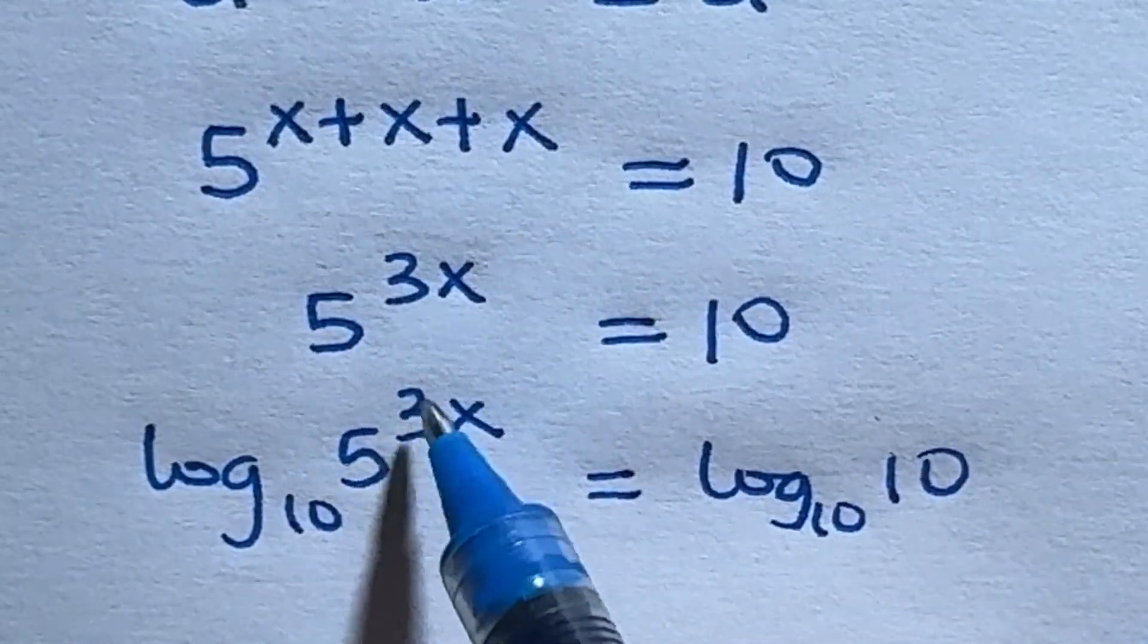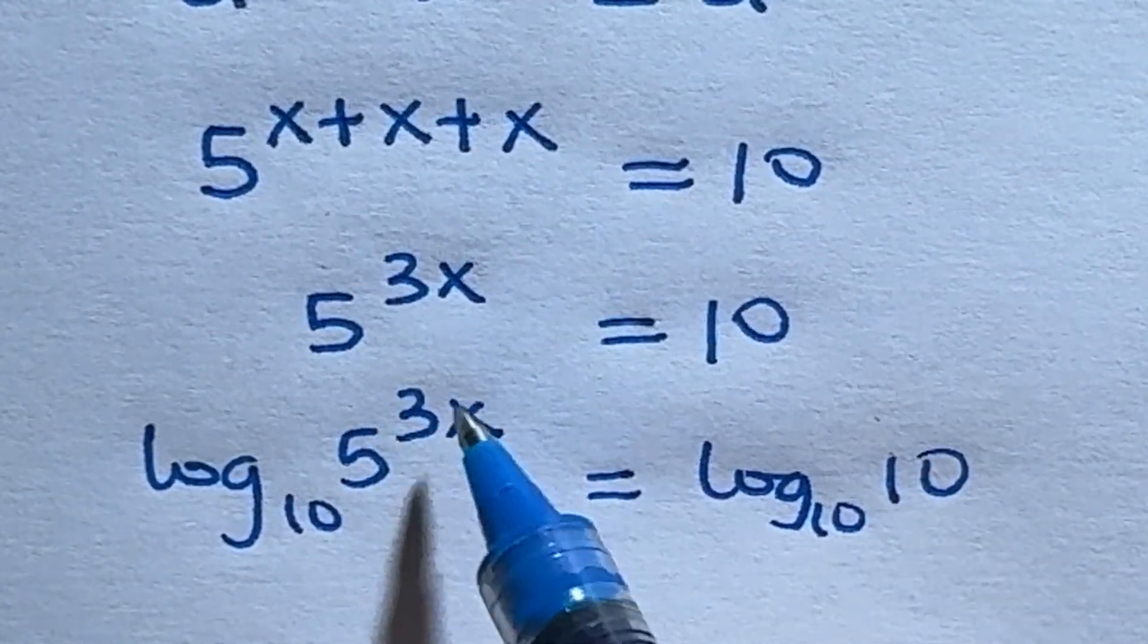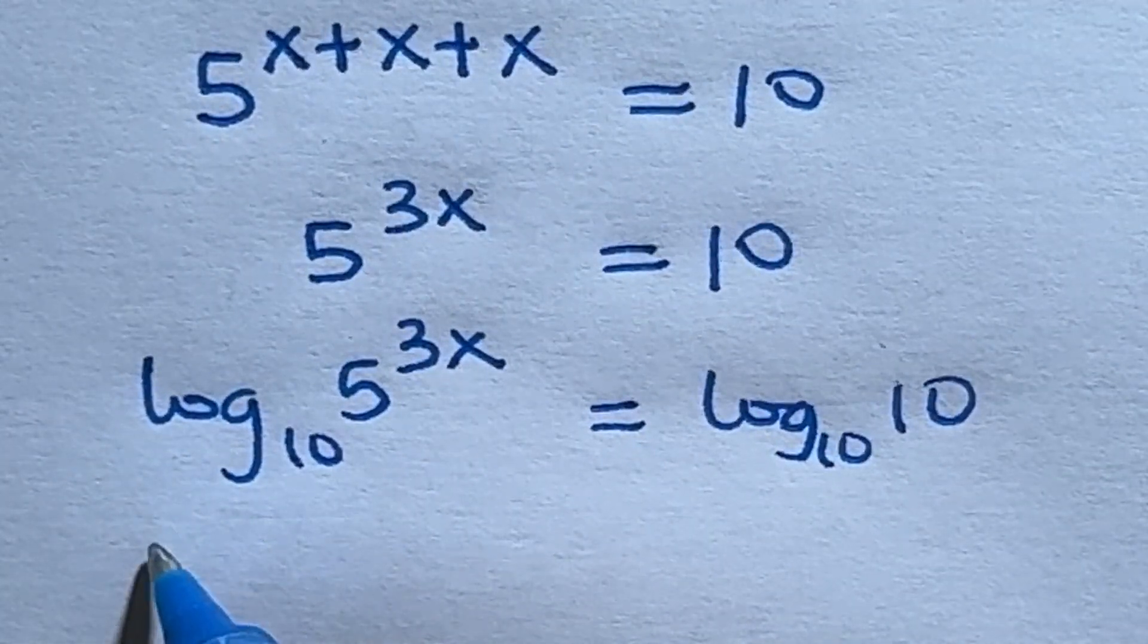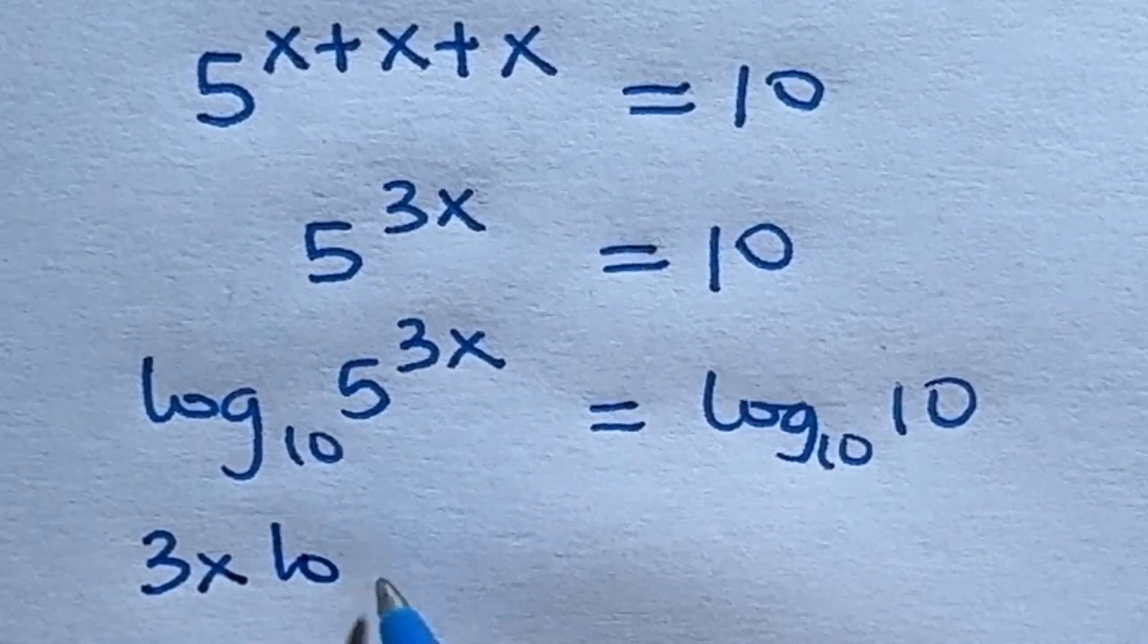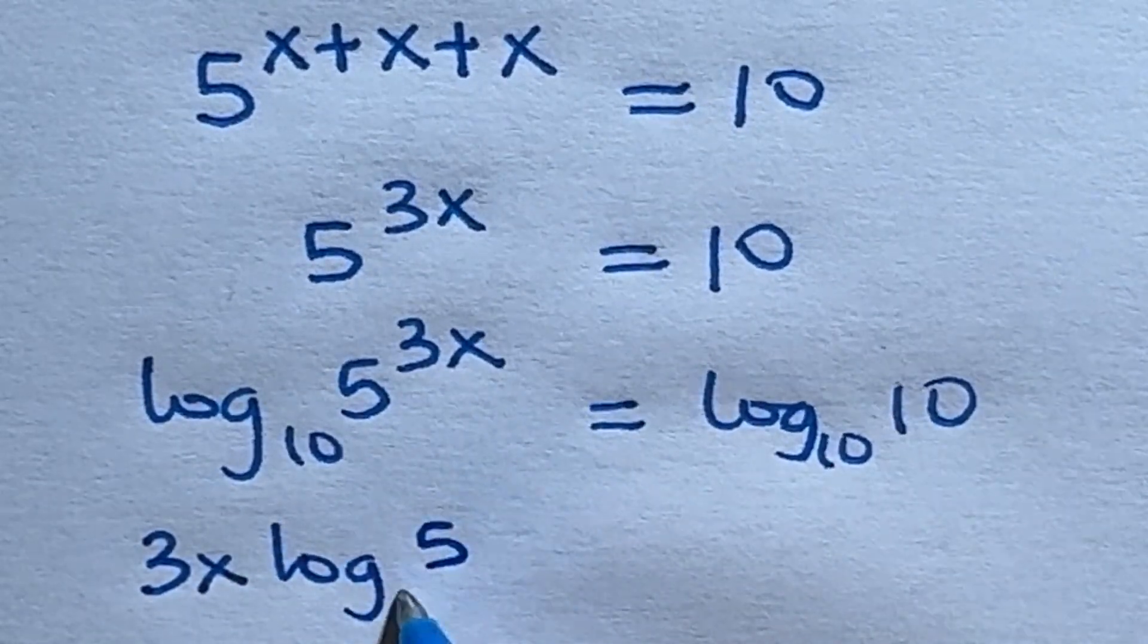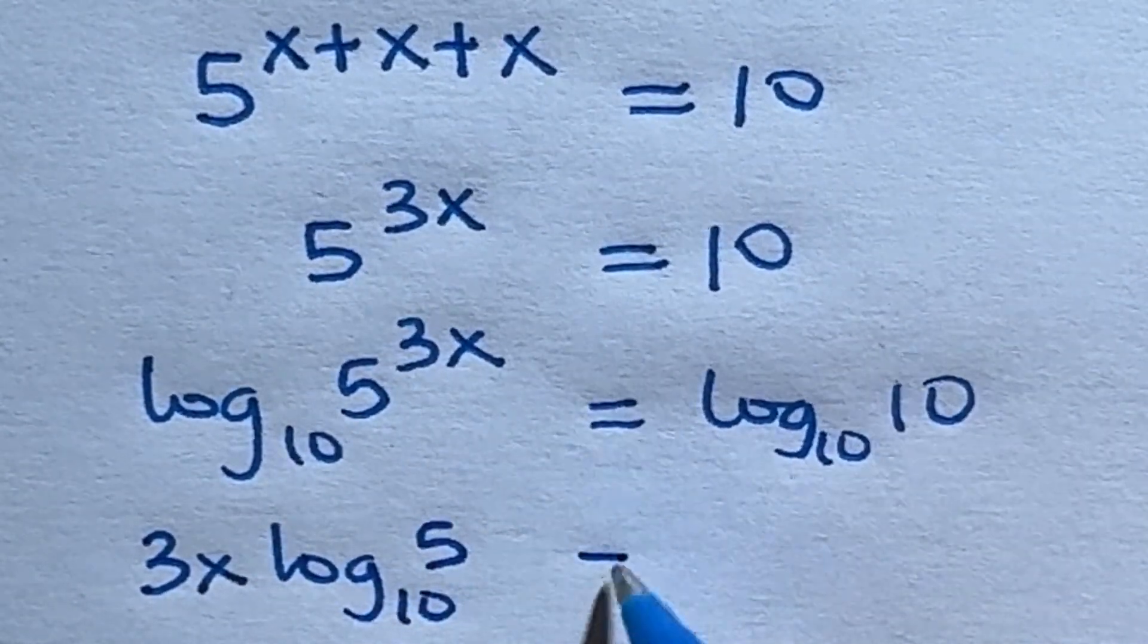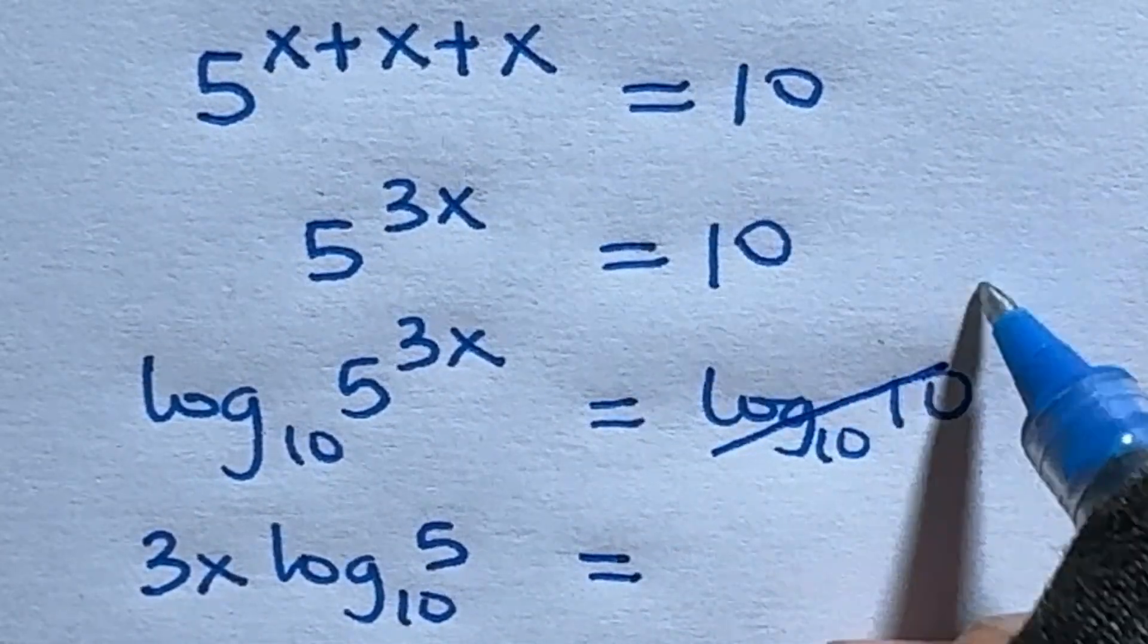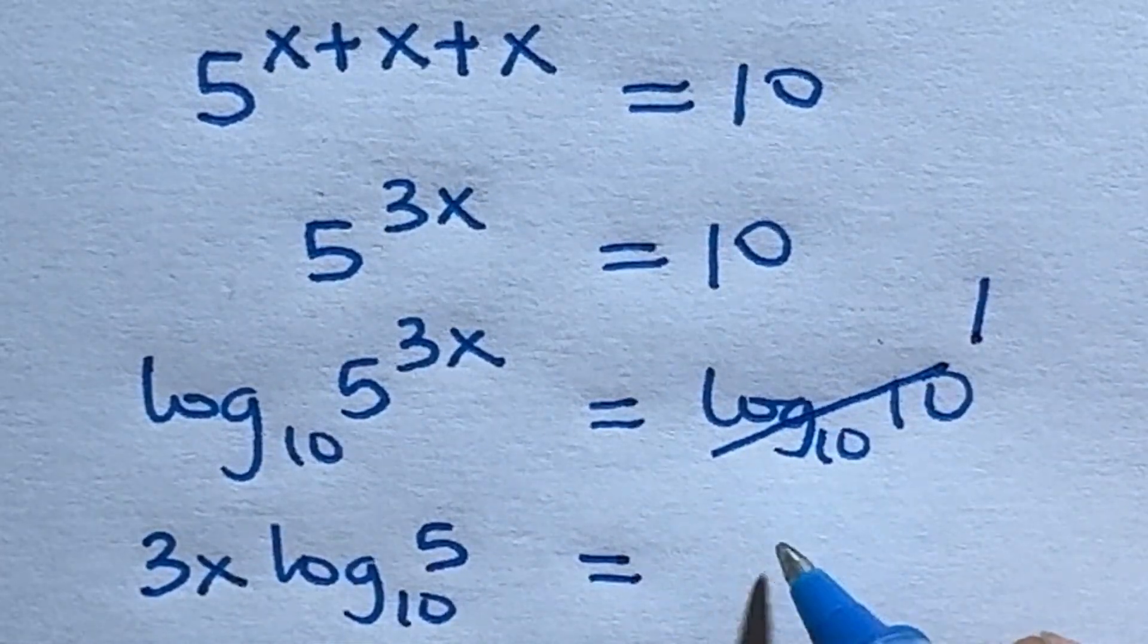This way, we can now transfer 3x to the back. So we have 3x log 5 base 10 is equal to log 10 base 10 is 1. So this gives us 1.